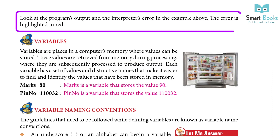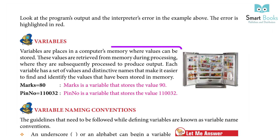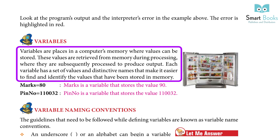Look at the program's output and the interpreter's error in the example above. The error is highlighted in red. Variables are places in a computer's memory where values can be stored. These values are retrieved from memory during processing, where they are subsequently processed to produce output. Each variable has a set of values and distinctive names that make it easier to find and identify the values stored in memory.